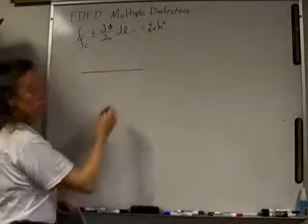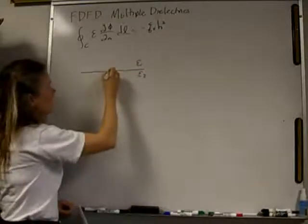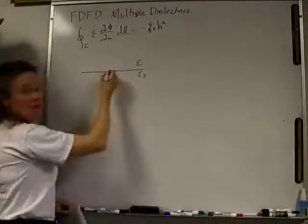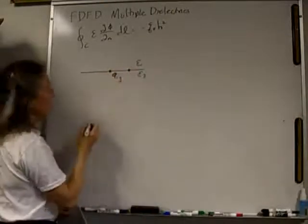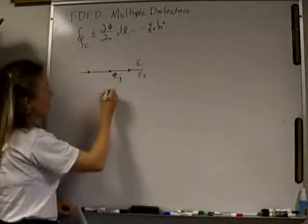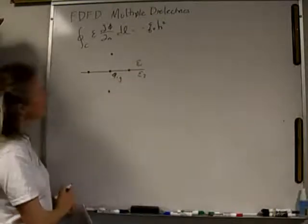Here is our boundary between two dielectrics. Here is Epsilon 1, and here is Epsilon 2. I'm going to draw my FDFD points. This is phi of IJ. Right here I have phi of I plus 1J, phi of I minus 1J, phi of IJ minus 1, and phi of IJ plus 1. See my FDFD stencil?